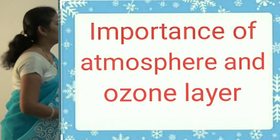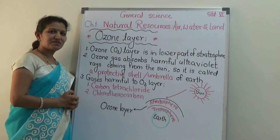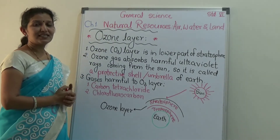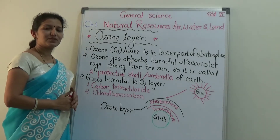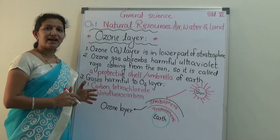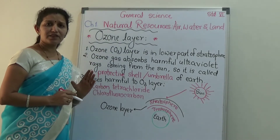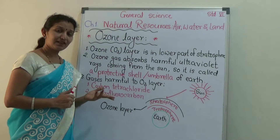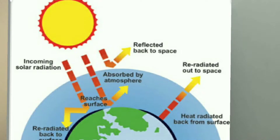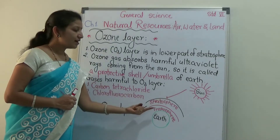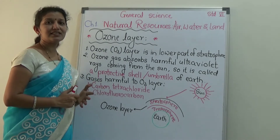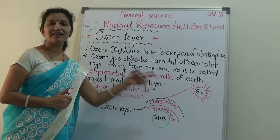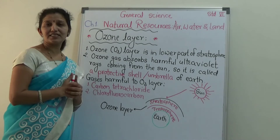Now we will study the importance of this atmosphere. We know that the balance between this living world is sustained only because of the constituents of air and their proportion. This atmosphere is a very important sphere of the earth because it acts as an important filter — it protects living things by allowing the sunlight and heat of the sun to reach the earth.